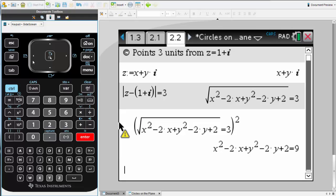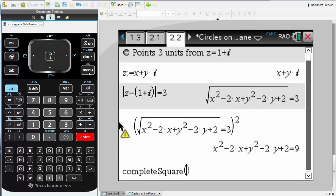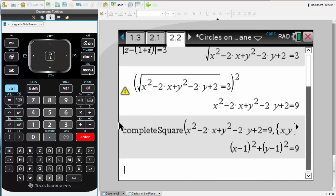And then, to make it look a little bit more attractive or perhaps in a more familiar way, we'll complete the square. And there we have it. It's the equation to a circle. x minus 1 all squared plus y minus 1 all squared equals 9. How'd you go?